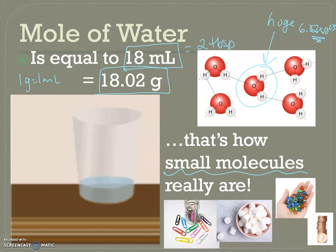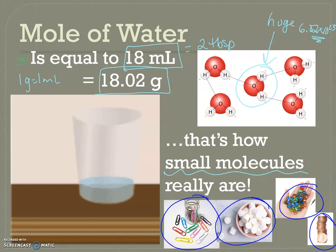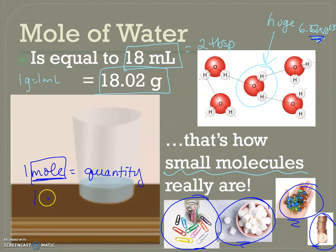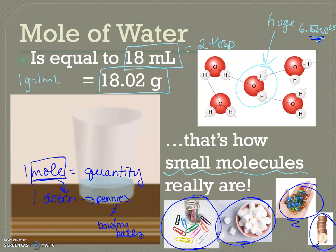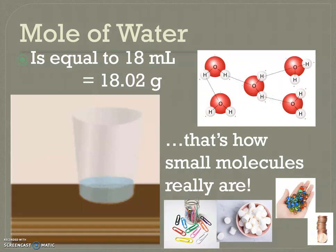You might wonder: paper clips, marshmallows, marbles, and pennies are also small, so why are those mole amounts so enormous? Because you can see them with the naked eye — so a mole of visible objects is also a huge visible amount. One mole represents a quantity. If you get lost with the idea of a mole, think of it like a dozen. But a dozen of everything doesn't weigh the same — a dozen pennies does not equal a dozen bowling balls.